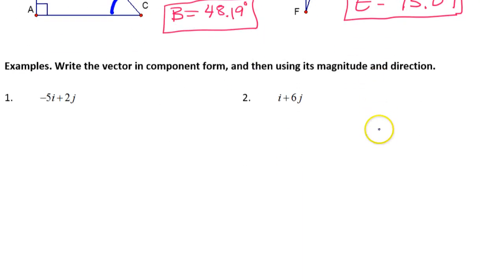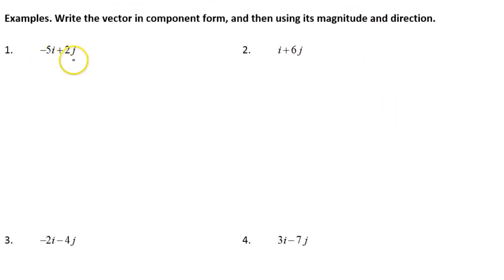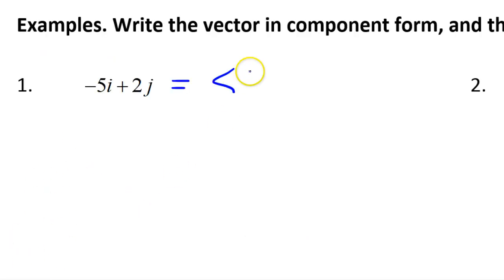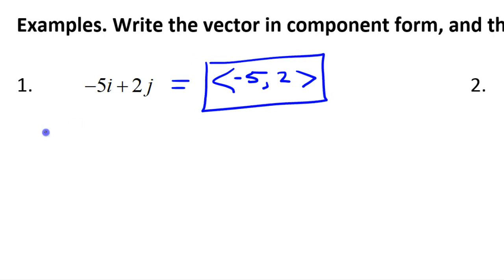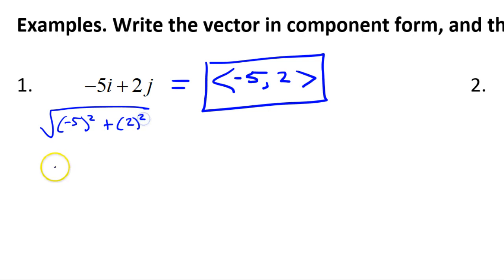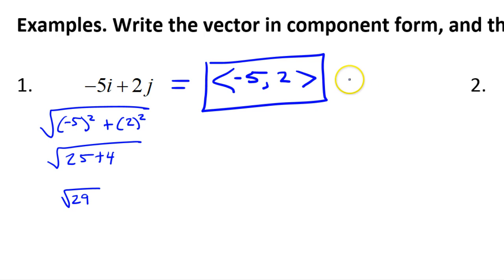Now let's get started. These vectors are written in unit vector form and we can easily convert them to component form. Looking at negative 5 and 2, the component form is (-5, 2). For the magnitude, that's the square root of (-5)² + 2² = the square root of 25 + 4 = the square root of 29.